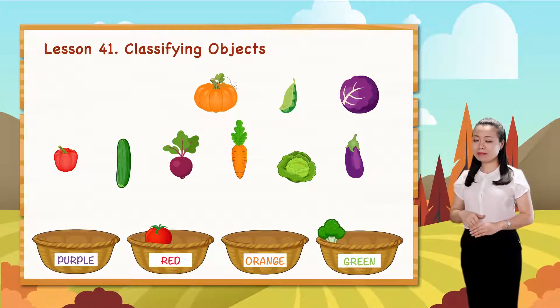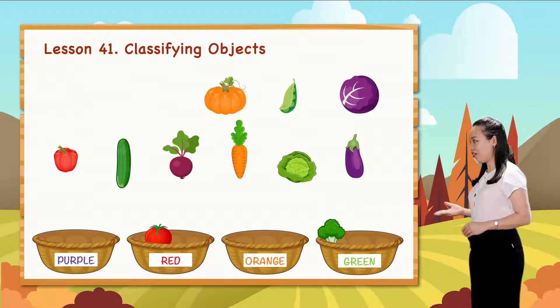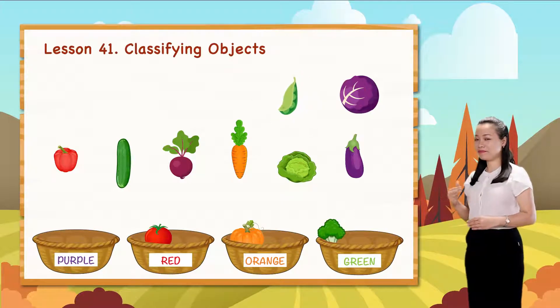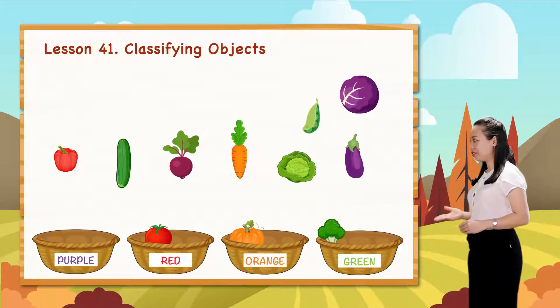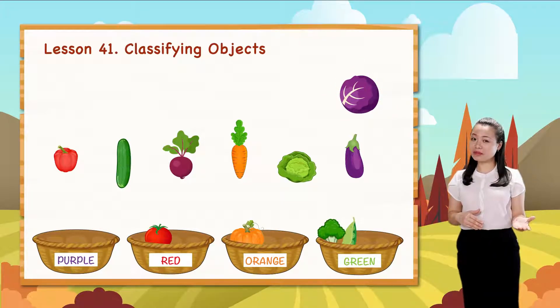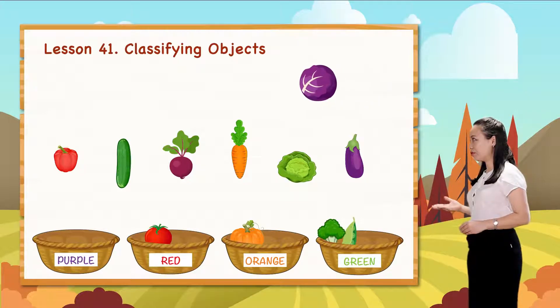This is a pumpkin. It's orange. Let's put it into the orange group. A pea. Put it into the green group. A purple cabbage. Of course, put it into the purple group.